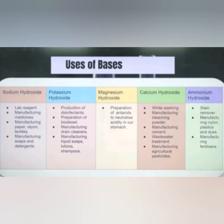Magnesium hydroxide, also known as milk of magnesia, is used in the preparation of antacids to neutralize acidity in our stomach. It removes acidity from our stomachs when anyone suffers from gastritis.